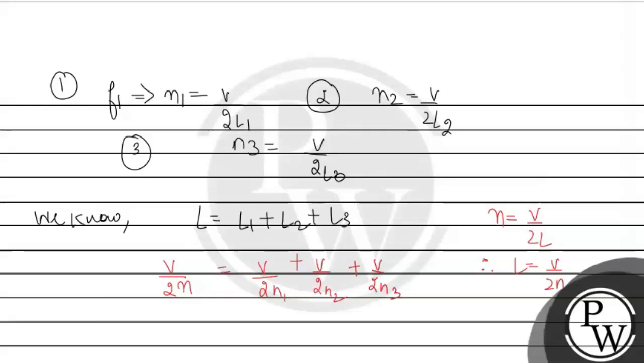Now v over 2 cancels out, so we get 1 over n equals 1 over n1 plus 1 over n2 plus 1 over n3.